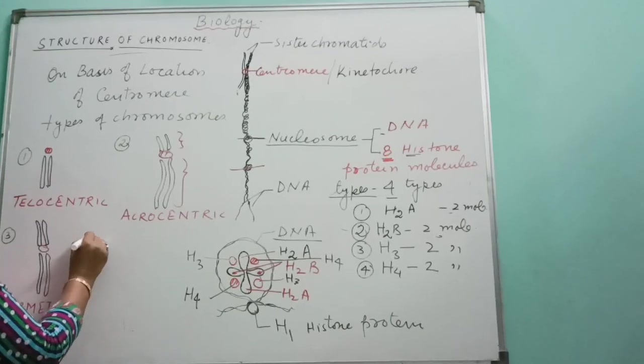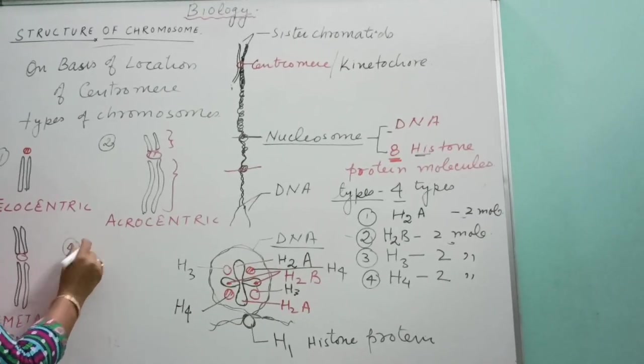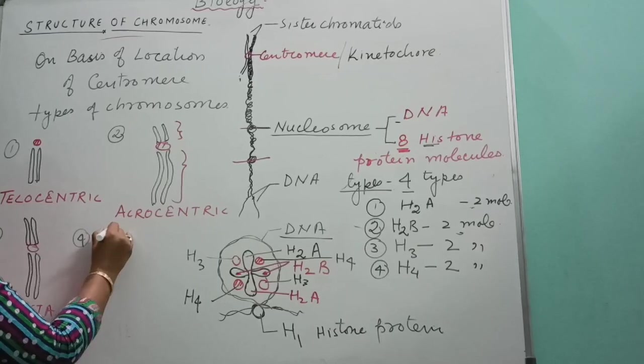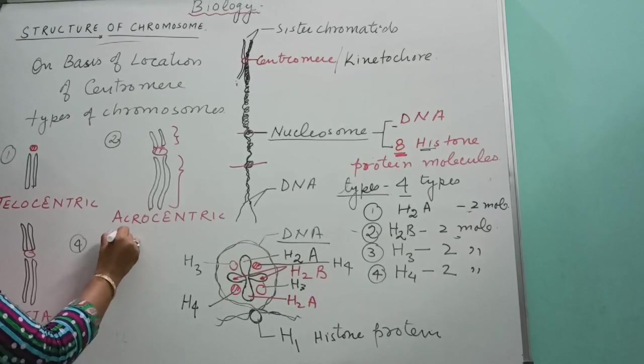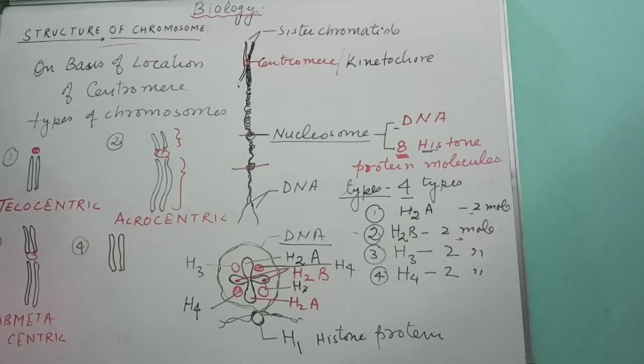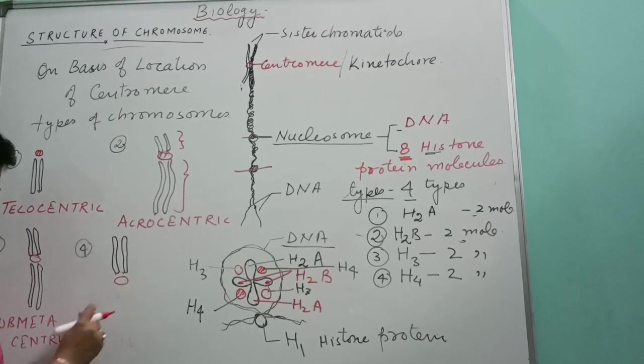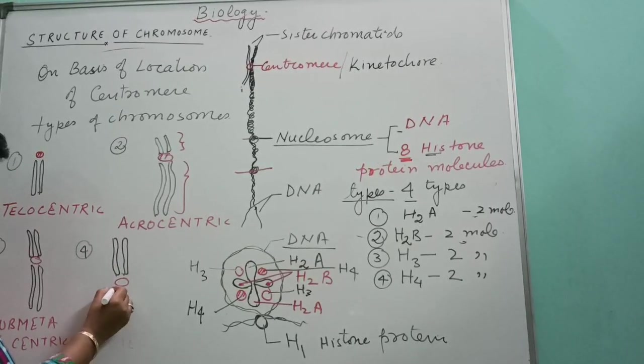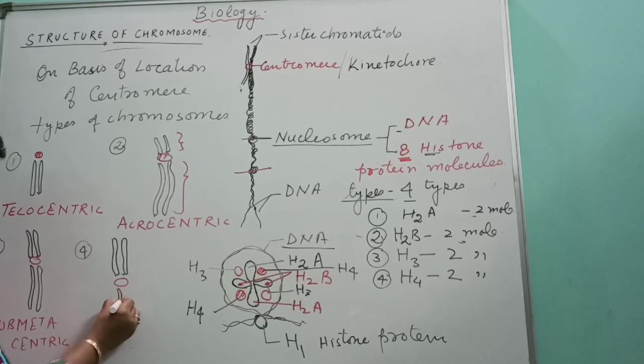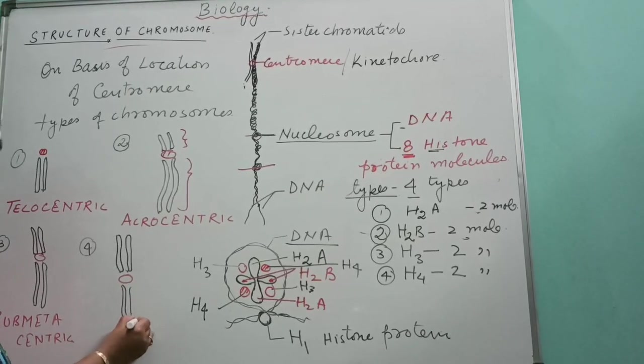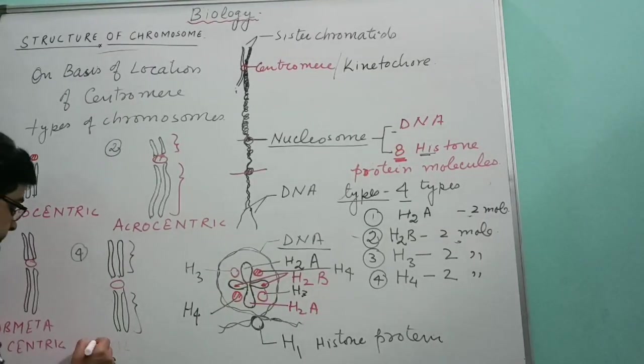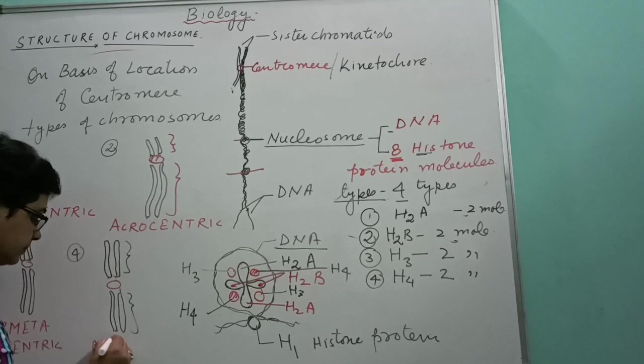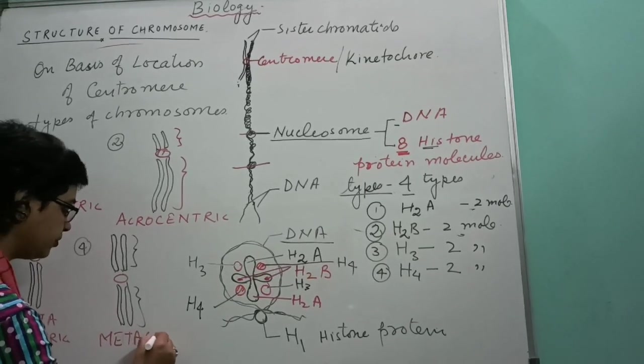Number four, that is two arms are exactly equal. That means centromere is present in between, and it is present like this. That these two arms are equal in size, this length. Then it is termed as metacentric.